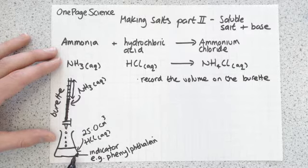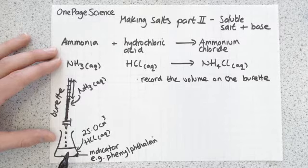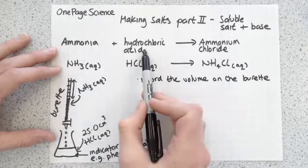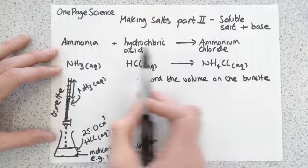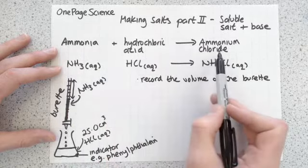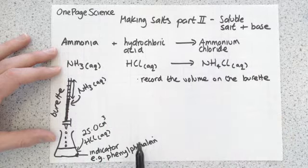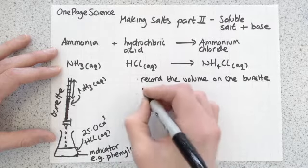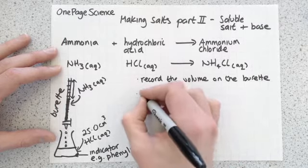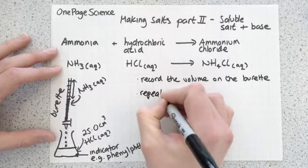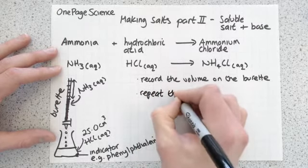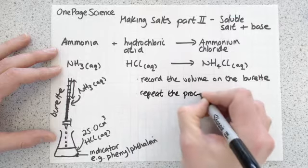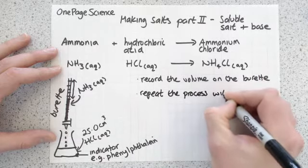What you have now is a sample of your salt that's exactly neutralized — no ammonia, no hydrochloric acid, just ammonium chloride. The only problem is you've still got the indicator in there, so you need to repeat the whole process.